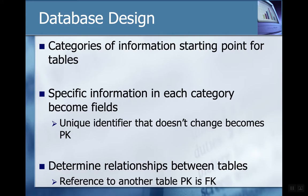One of the rules around tables is that every row has to be unique, which means one field has to have a unique value. It's a value that doesn't change and no other row or record has it. That's what we call a primary key.